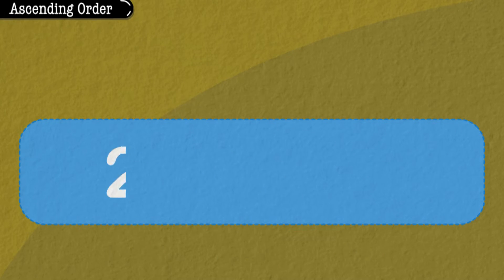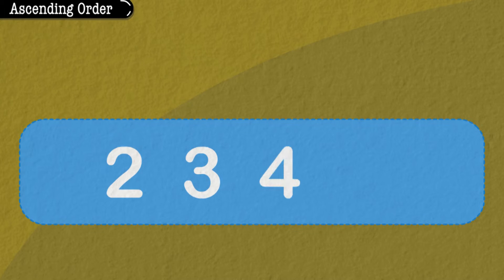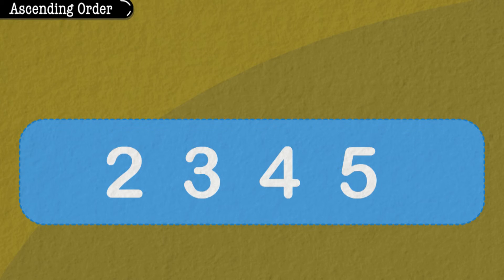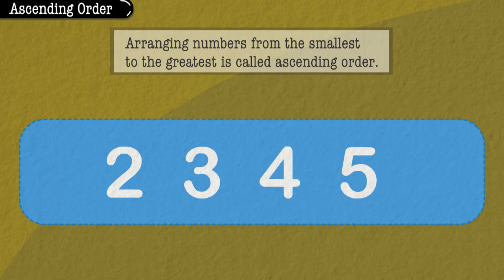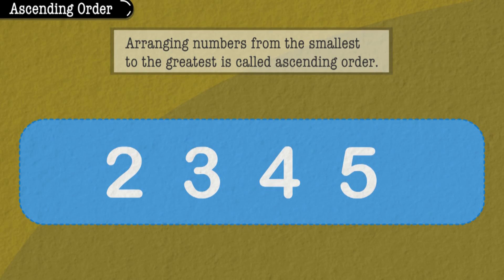We can write these numbers in their increasing values like this. This way of arranging numbers from the smallest to the greatest is called ascending order.